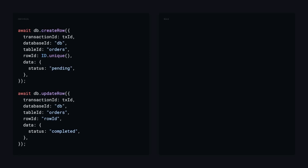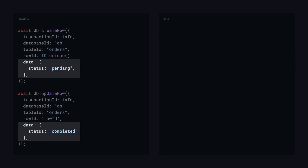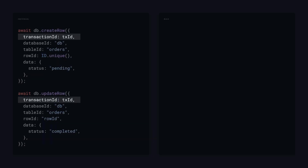From there, we need to stage our operations, and there are two ways of doing this. The traditional way is to call the same methods you normally would — create row, update row, or delete row — passing in the same parameters: database ID, table ID, row ID or item ID, and the data. The difference here is that we also pass in the transaction ID. Once we do that, it won't actually execute the operation immediately; it puts it into the staging environment.